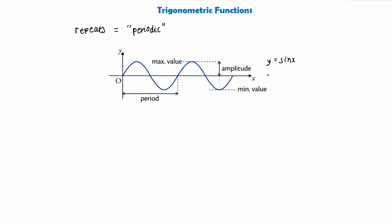Now, if the repeating pattern has a minimum and a maximum value, then half of the distance between these is called the amplitude. As you can see, this graph will never get higher than the maximum value, and it will never go lower on the y-axis than the minimum value. The distance from the x-axis to the max value, or the distance from the x-axis to the min value, is called the amplitude.